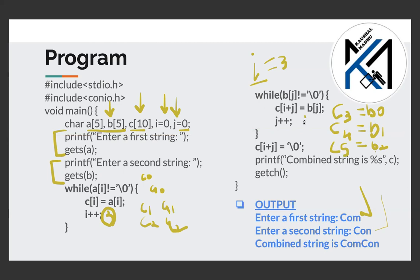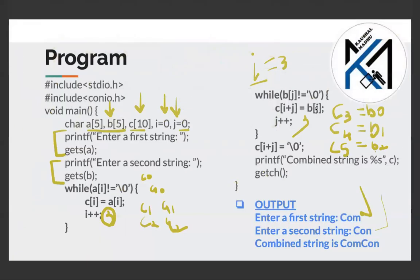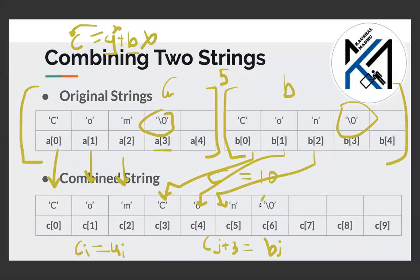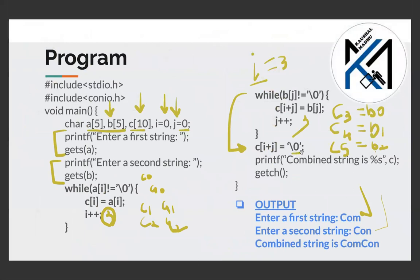If b[3] does not equal null, then we continue. Once b[3] equals null, we exit the loop. If you have to print the combined string, make sure you null-terminate it. If you don't have null to terminate the string, you will get an abnormal output.